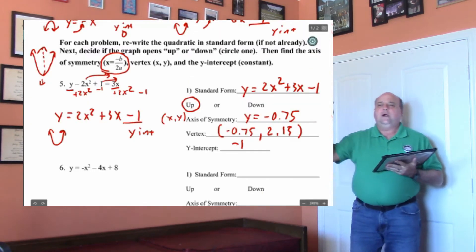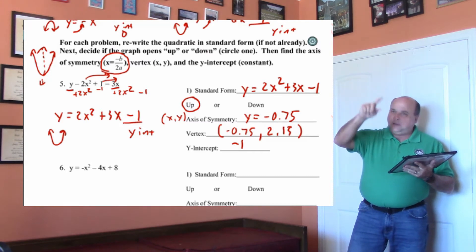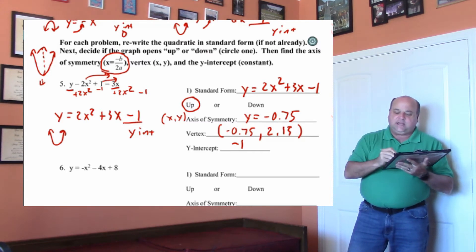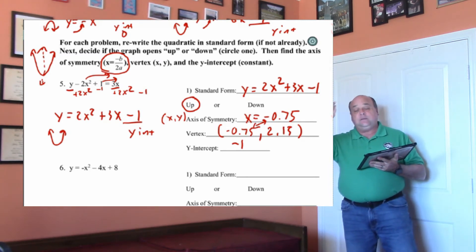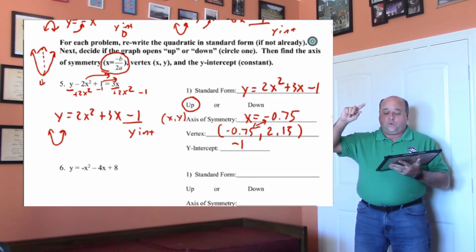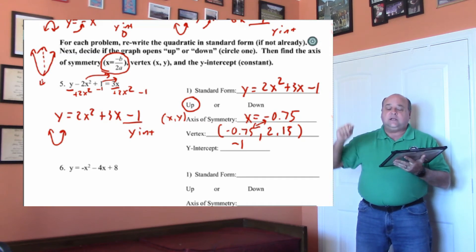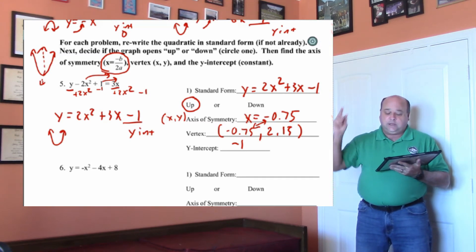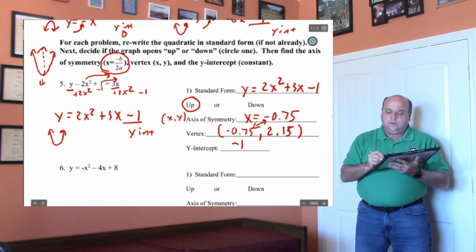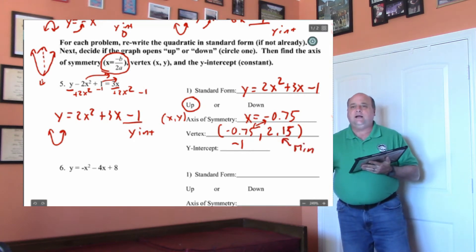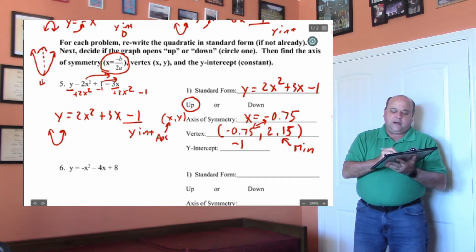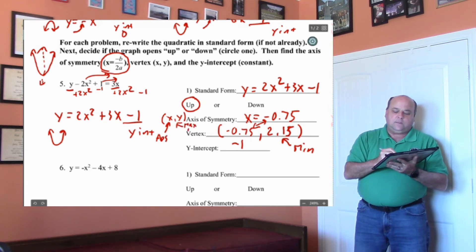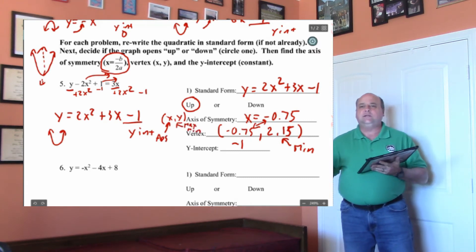The vertex is negative 0.75 comma 2.13. So graph the equation, then write down that vertex. The axis of symmetry and the x-coordinate of the ordered pair is going to be the same number. This number right here is the minimum — that number and the y is the minimum. So the vertex is really important. The axis of symmetry will be your x, and the y will be the max or the min, every single time.